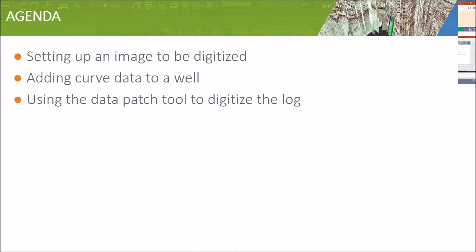Today's agenda: we're going to be looking at setting up an image to be digitized using depth-registered raster logs — really any image that you depth register can be used. Then we're going to be adding some curve data to the well. This works in one of two ways: either you have a well that's already got curve data and you go straight to digitizing, or you're creating curve data for a well that didn't have any previously — starting from scratch. We're looking at that second method, a well that has no curve data already.